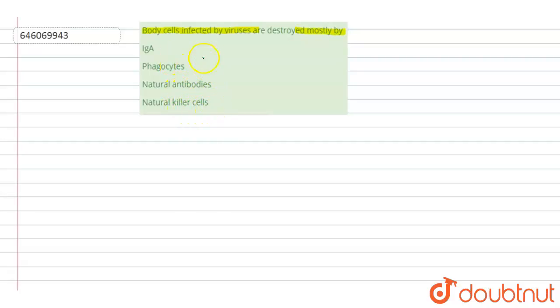So here we will see each option one by one. Immunoglobulin A - it is an antibody that is mainly secretory in function, or we can say secretory in nature. It is present in various secretions like saliva, tears, mucus, and even in breast milk.